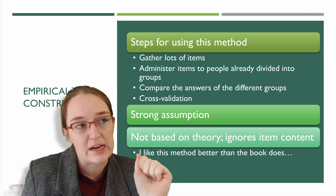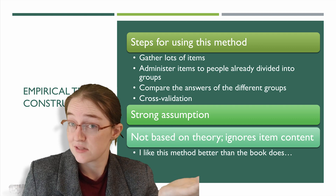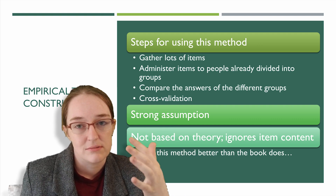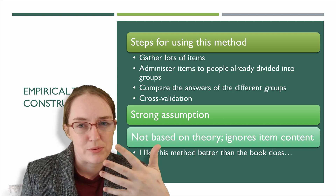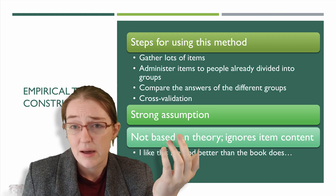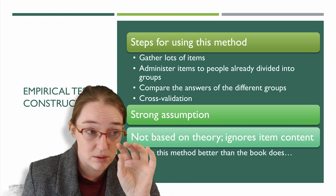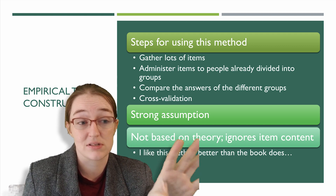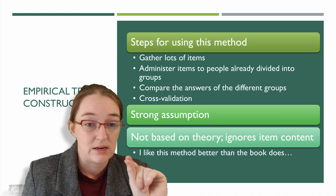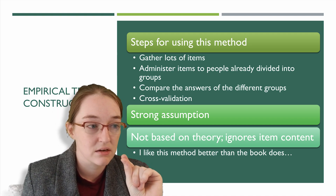These groups usually have a clinical diagnosis, or in vocational interest inventories, they find people who are really happy and successful at their job versus those who are unsuccessful or unhappy. They compare the answers across the groups and find the questions that distinguish them.